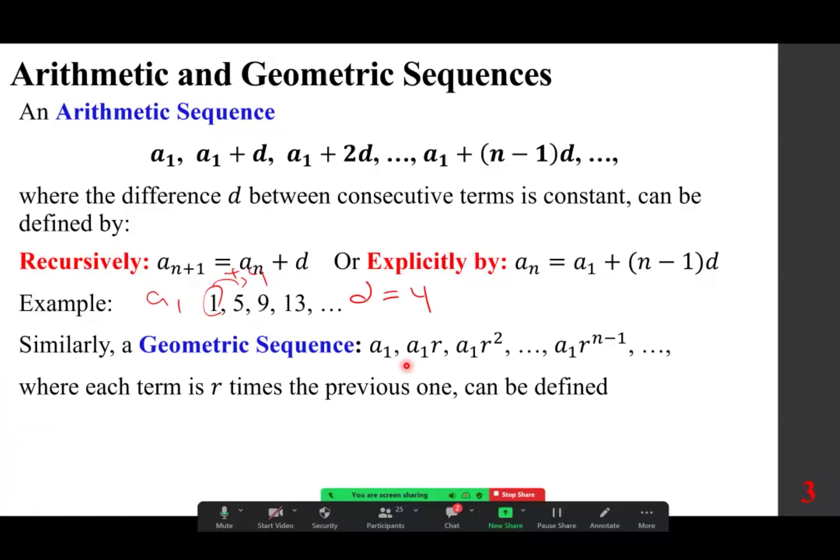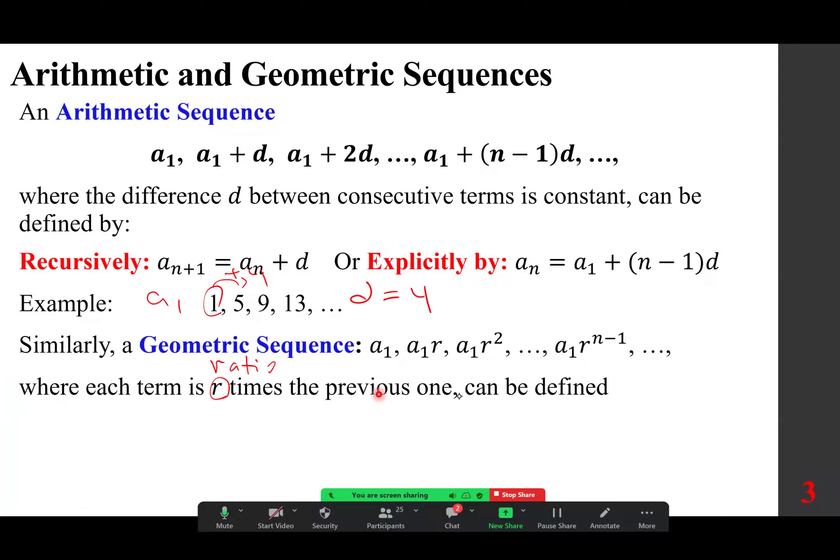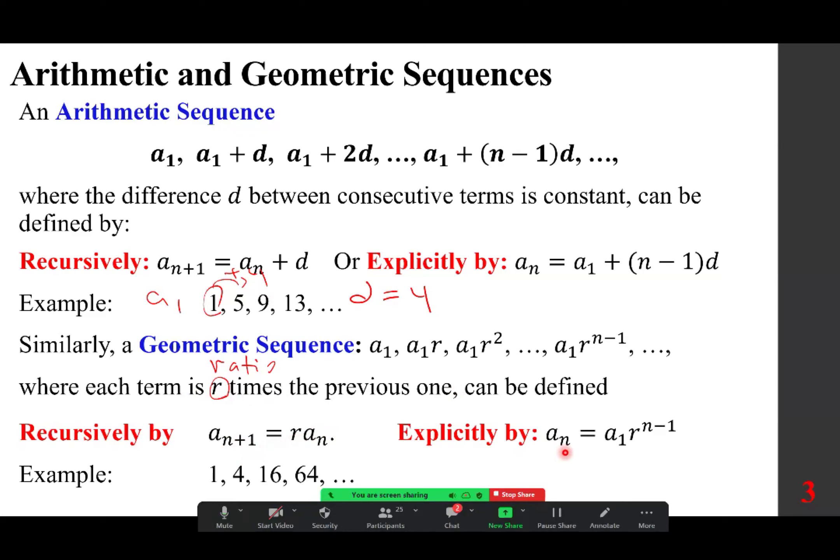In the case of a geometric sequence, we multiply by r, known as a common ratio or simply ratio. A sub 1, a sub 1 times r, a sub 1 times r squared, a sub 1 times r to the power of n minus 1, where each term is r times the previous one. Can be defined recursively, a sub n plus 1 is r a sub n, meaning if you want any term, pick the previous one times r, or in general, explicitly a sub n is a sub 1 times r to the power of n minus 1.